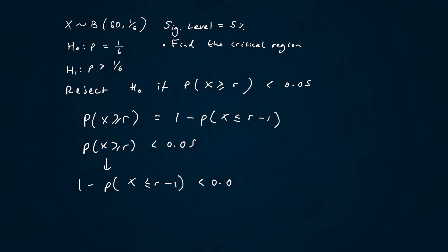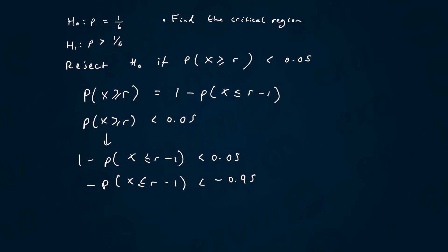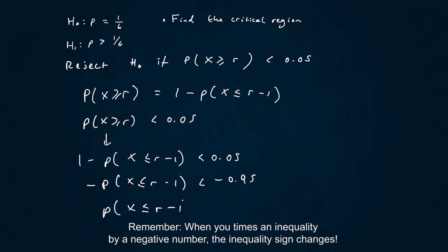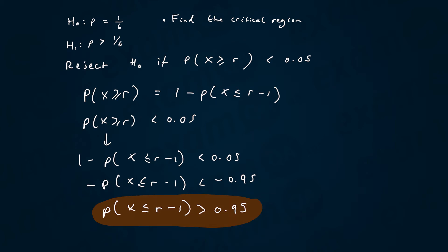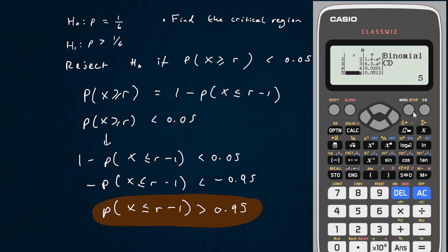We rearrange: subtract 1 from both sides to get −P(X ≤ r−1) < −0.95, then multiply both sides by −1 (flipping the inequality) to get P(X ≤ r−1) > 0.95. So we now need to find the value where getting less than or equal to it is just bigger than 0.95 — something our calculator can handle.